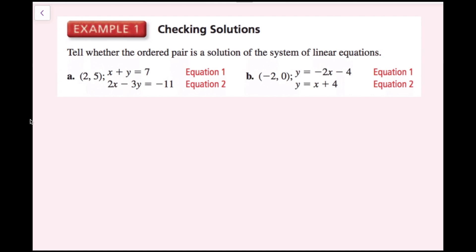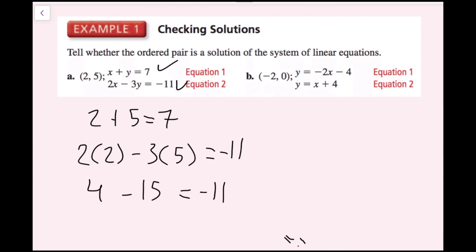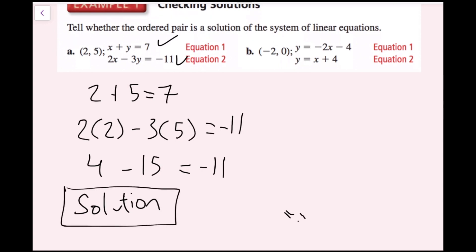For the first one, I'm going to plug in 2 for x and 5 for y, and I get 2 plus 5 equals 7. That is true, so it works for the first equation. For the second one, I have 2 times 2 minus 3 times 5, which equals 4 minus 15. Does that equal negative 11? Yes, it does. So this is a solution because (2, 5) works for both equations.